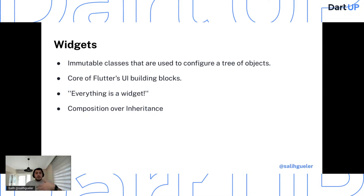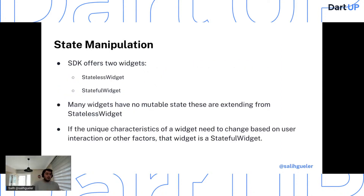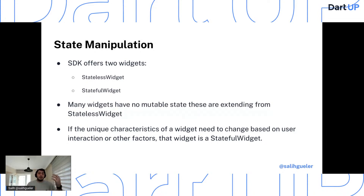For example, the Container widget — a commonly used widget — is made up of several widgets like Padding, BoxDecoration, Align, and so on. Even inside Flutter there is heavy composition over inheritance. An important part of any UI framework is an efficient way to lay out a hierarchy of widgets, determining size and position of each element before rendering. That's why we have multiple trees sending information top and bottom.